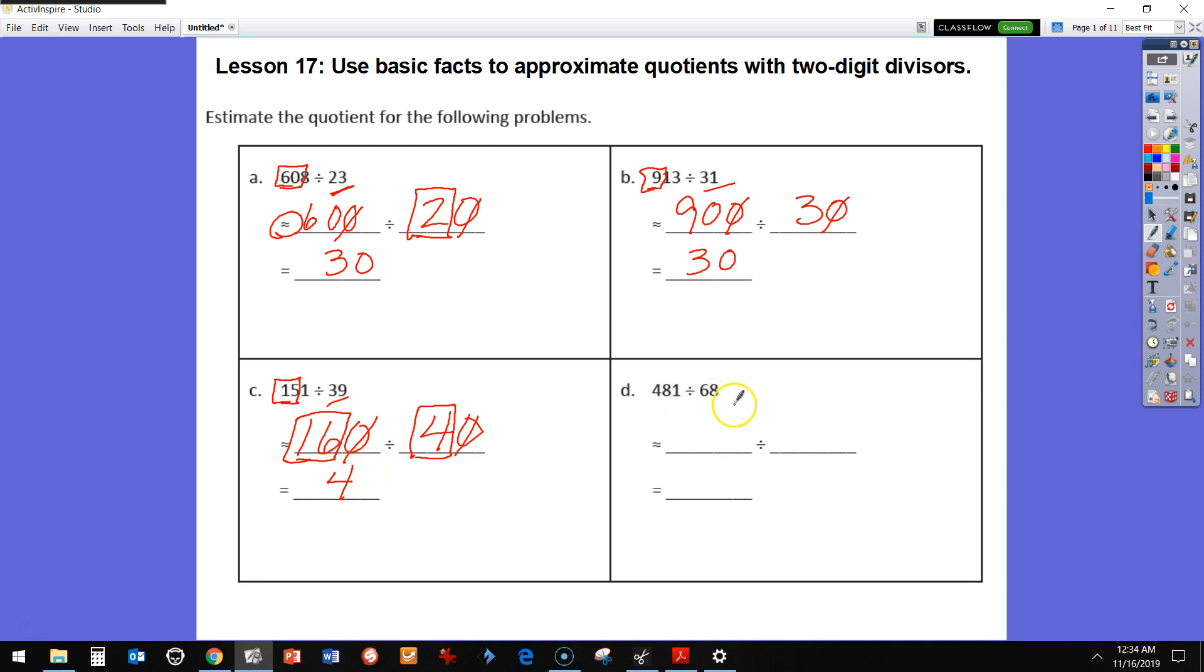All right, last but not least, D. So this is close. My divisor is close to 70 or around to 70. Then I'm going to use front-end estimation and say, 48 is not a multiple of 70, but 49 is. So I'm going to go with 49 tens.